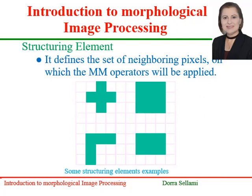Let's start with an element of great importance in mathematical morphology definition — the structuring element. As its name stands, it is a basic element whose topology can be different. Varying such topology, as well as the size of the structuring elements, yields great generosity and gives different results in the corresponding processing. Here we illustrate some different structuring element shapes: the cross-shaped one, the rectangular shape, and other shapes that can be used. We can as well vary their sizes.